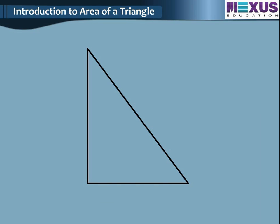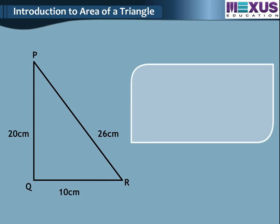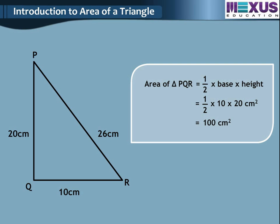Let's see an example. For a right angle triangle PQR, the sides are 10 cm, 20 cm and 26 cm. We will take 10 cm as base and 20 cm as height. So area of triangle PQR is equal to half into base into height, equal to half into 10 into 20, which equals 100 cm square.